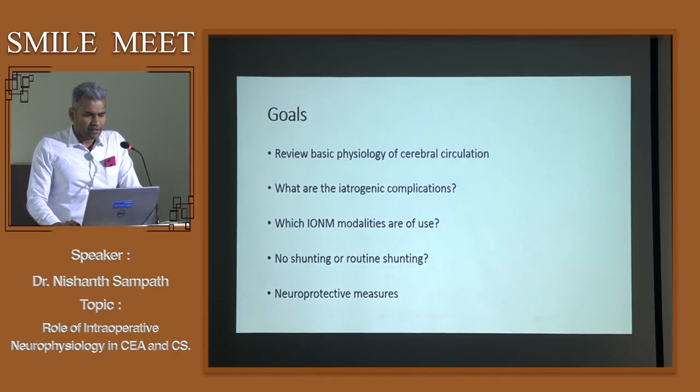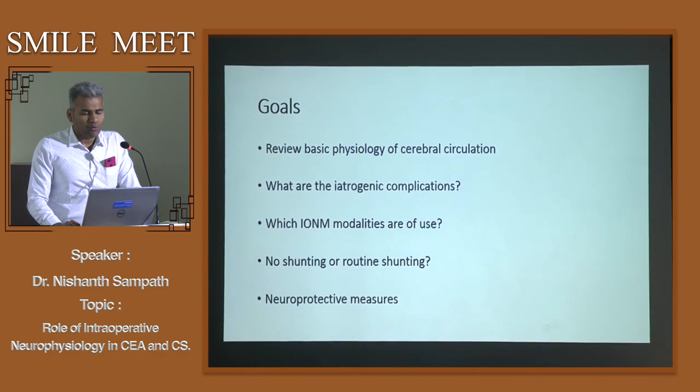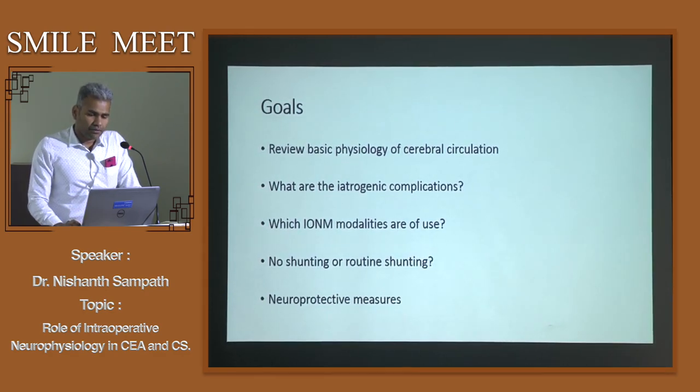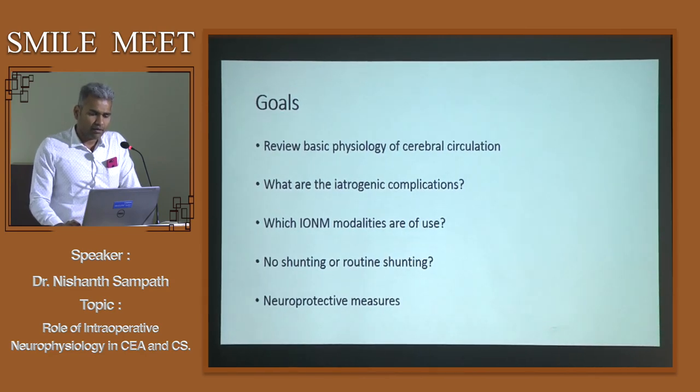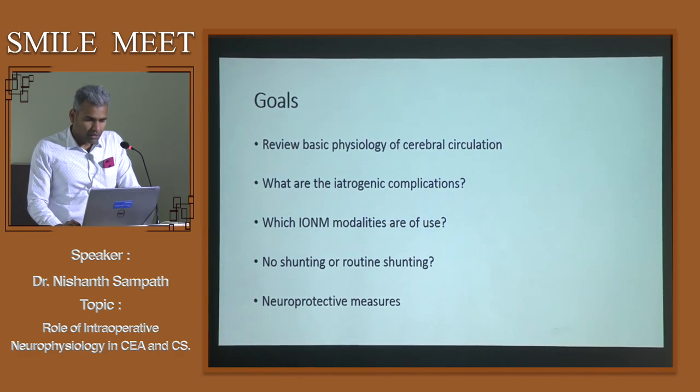The goals of my presentation are: to review the basic physiology of cerebral circulation, to discuss the iatrogenic complications of carotid artery interventions, and what intraoperative modalities are of benefit for these procedures. The current consensus is selective shunting — neuromonitoring guides which patients require a shunt. I'll also talk about neuroprotective measures.